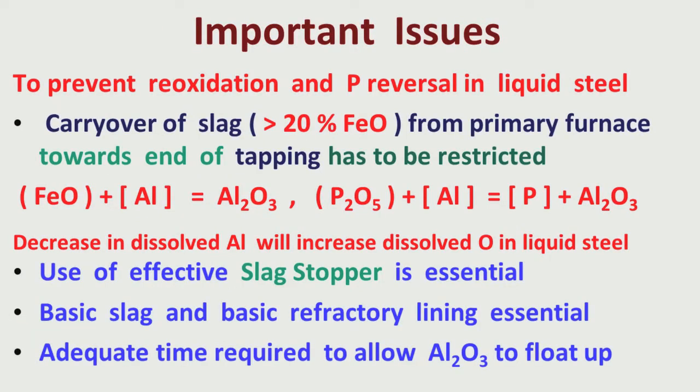I have talked about an important issue — to prevent reoxidation and phosphorous reversal in liquid steel, carryover of slags from the primary furnace towards the end of tapping has to be restricted. Because primary slag has a very large amount of iron oxide — much more than 20 percent, maybe 25 percent. Moreover, it has some amount of MnO (manganese oxide) and some amount of phosphorus oxide.